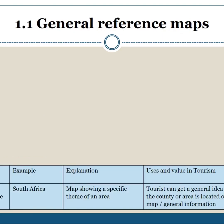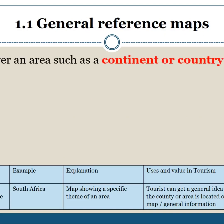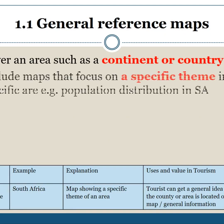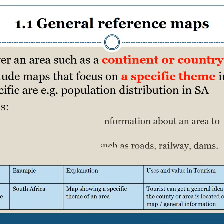The general reference map — what does that mean? It means it covers an area such as a continent or a country, and it includes maps that focus on a specific theme in a specific area. For example, population distribution in South Africa.